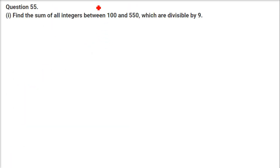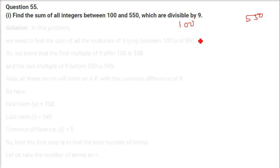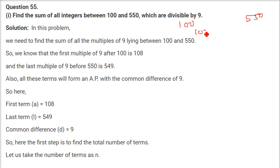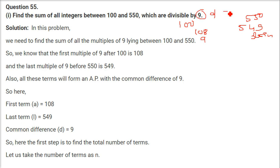Find the sum of all integers between 100 and 550 divisible by 9. The first number after 100 divisible by 9 is 108, and the last number before 550 divisible by 9 is 549. So A = 108, L (or Aₙ) = 549, and common difference D = 9.